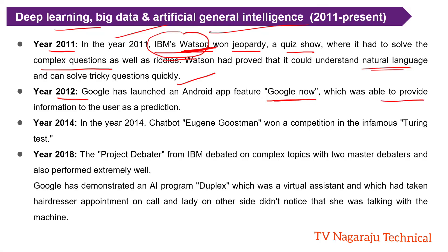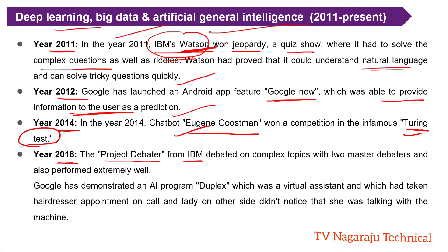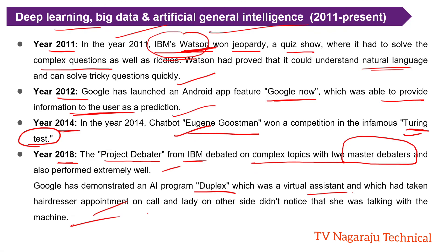In the year 2012, Google launched an Android app called Google Now, which is able to provide information to users as a prediction. In 2014, the popular chatbot Eugene Goostman passed the famous Turing Test, identifying the capability of a machine. In 2018, IBM developed Project Debater, which debates complex topics with master debaters. Google also provided a program called Duplex, a virtual assistant that performs operations on your behalf. By all this, artificial intelligence exists in our lives and plays a very crucial role.